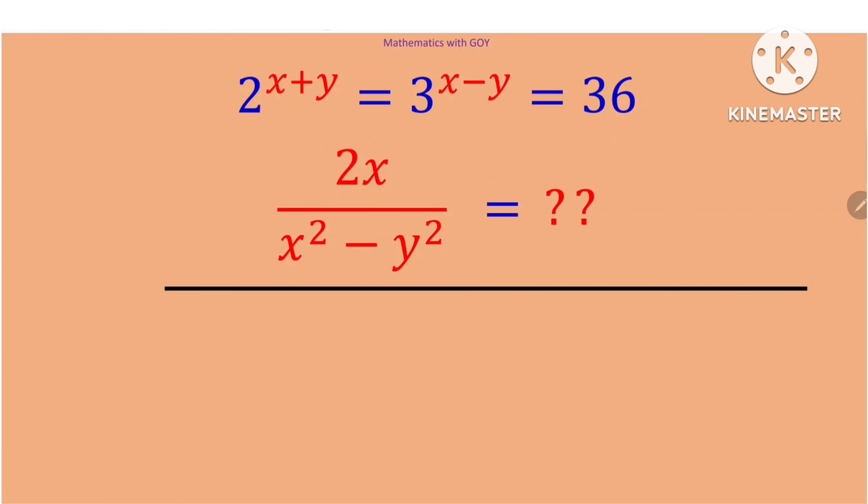Hello everyone, you are once more welcome to this channel. In today's lesson, we are given that 2 raised to the power x plus y is equal to 3 raised to the power x minus y, which is equal to 36. We need to find the value of 2x divided by x squared minus y squared. To answer this question, we are going to use two methods.